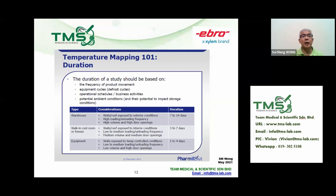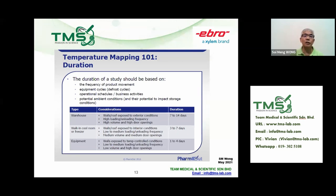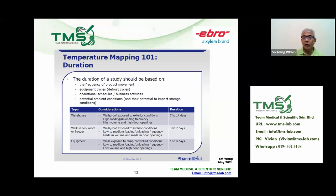The duration also depends on the operation schedule, business activity, potential ambient conditions, and their potential impact on storage conditions. If your warehouse faces the sun and the wall is poorly insulated, it will affect the inside temperature. The recommendation is seven to fourteen days for a warehouse, three to seven days for a walk-in cold room or freezer, and one to four days for equipment such as a refrigerator or freezer.